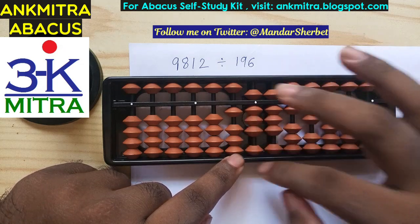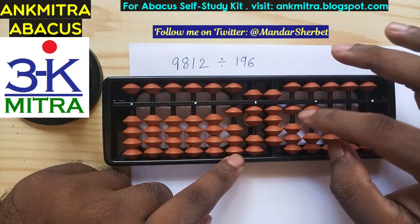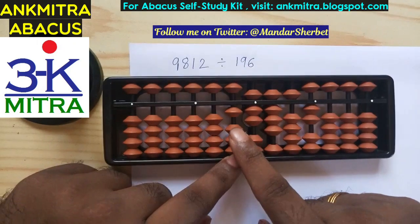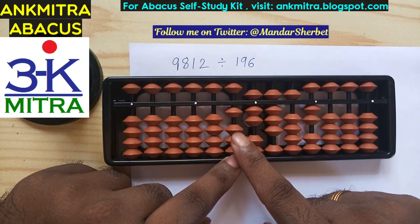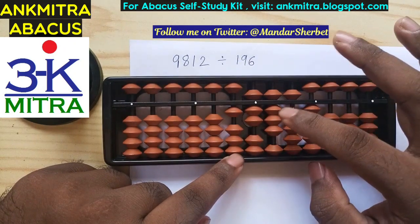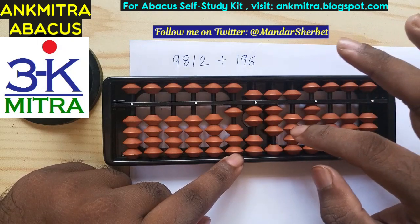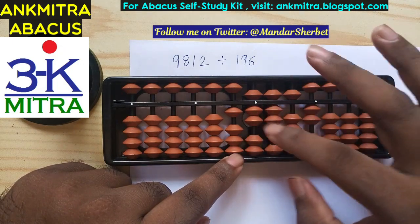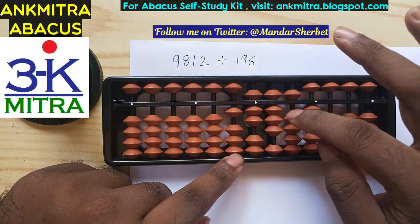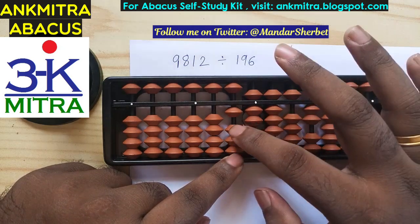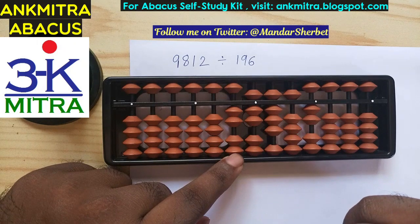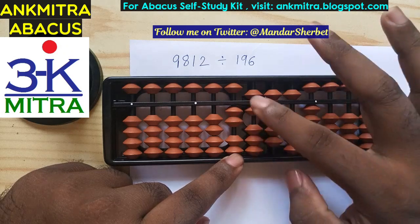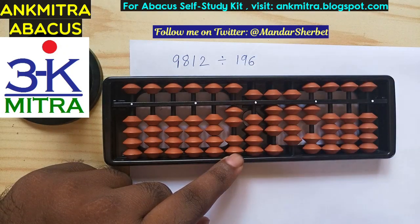So I'll subtract 196: for one, it's plus one minus ten; for nine, it's doing plus one minus ten; and for subtracting six, I'll do plus four minus ten. I have taken one on the tens place of the answer set and subtracted 196 from the initial 981. Then, since we still have a number larger than 196 on the same three digits, I'll take one more bead on the tens place of the answer set and subtract 196 again.